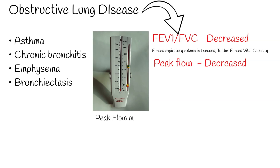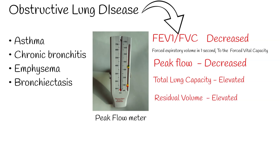Peak flow is also decreased. Peak flow is a quick test to measure air flowing out of the lungs, because the air cannot get out of the lung. Total lung capacity is elevated — it is the maximal volume of gas in the lungs after a maximal inhalation. Residual volume and functional residual capacity are also elevated. Residual volume is the amount of air that remains in a person's lungs after fully exhaling. Functional residual capacity is the volume in the lungs at the end of passive expiration.